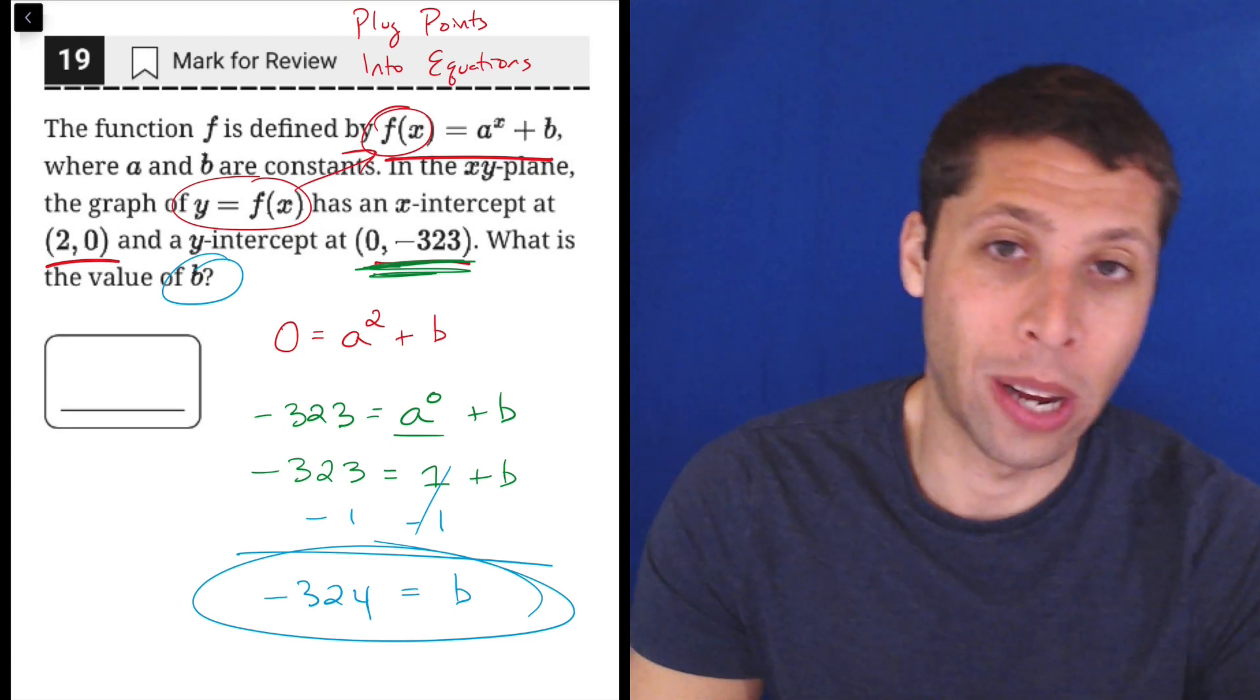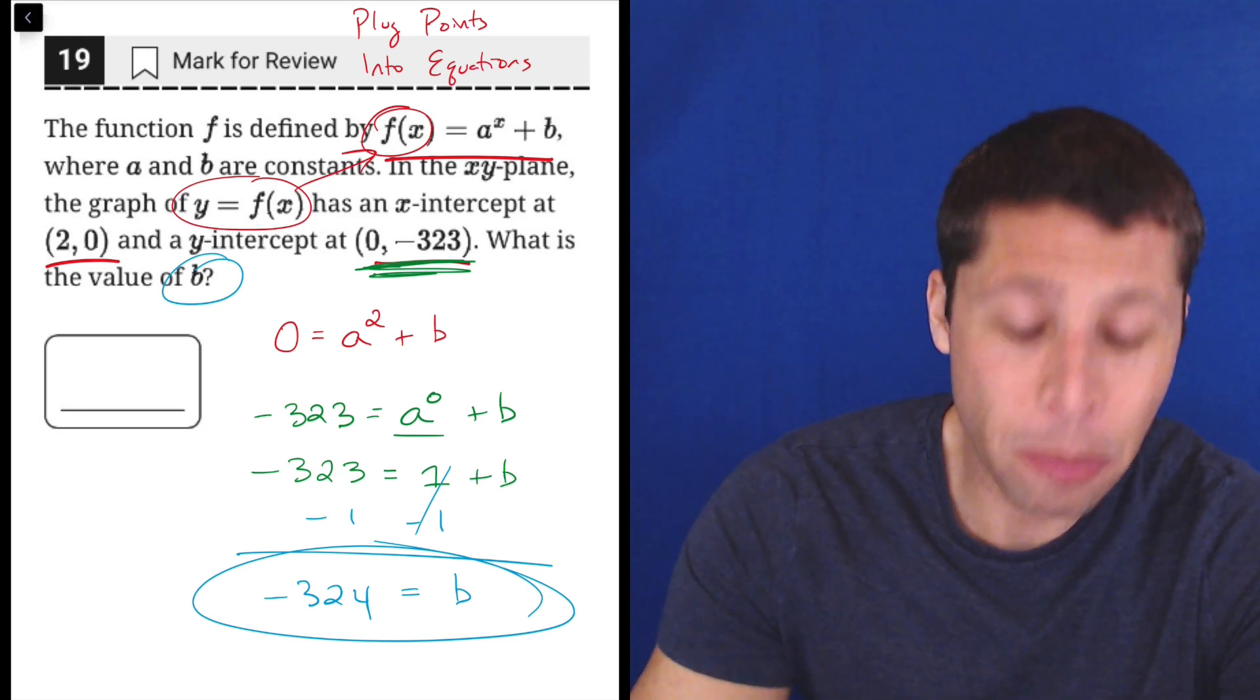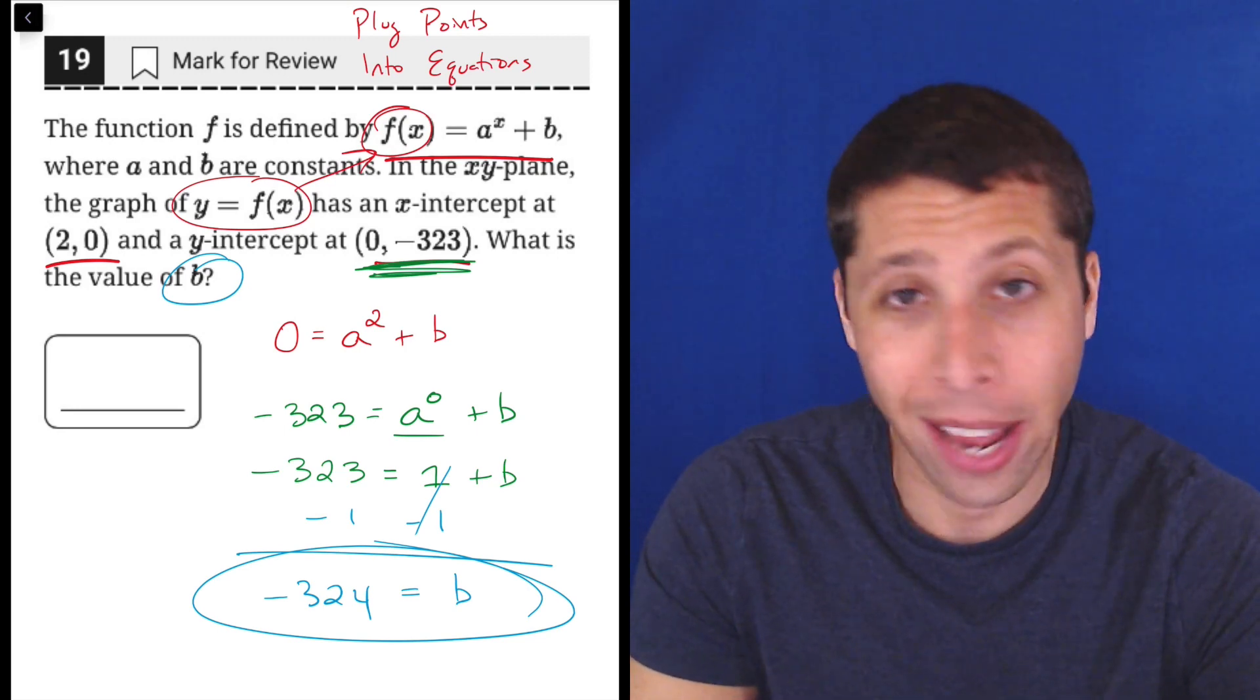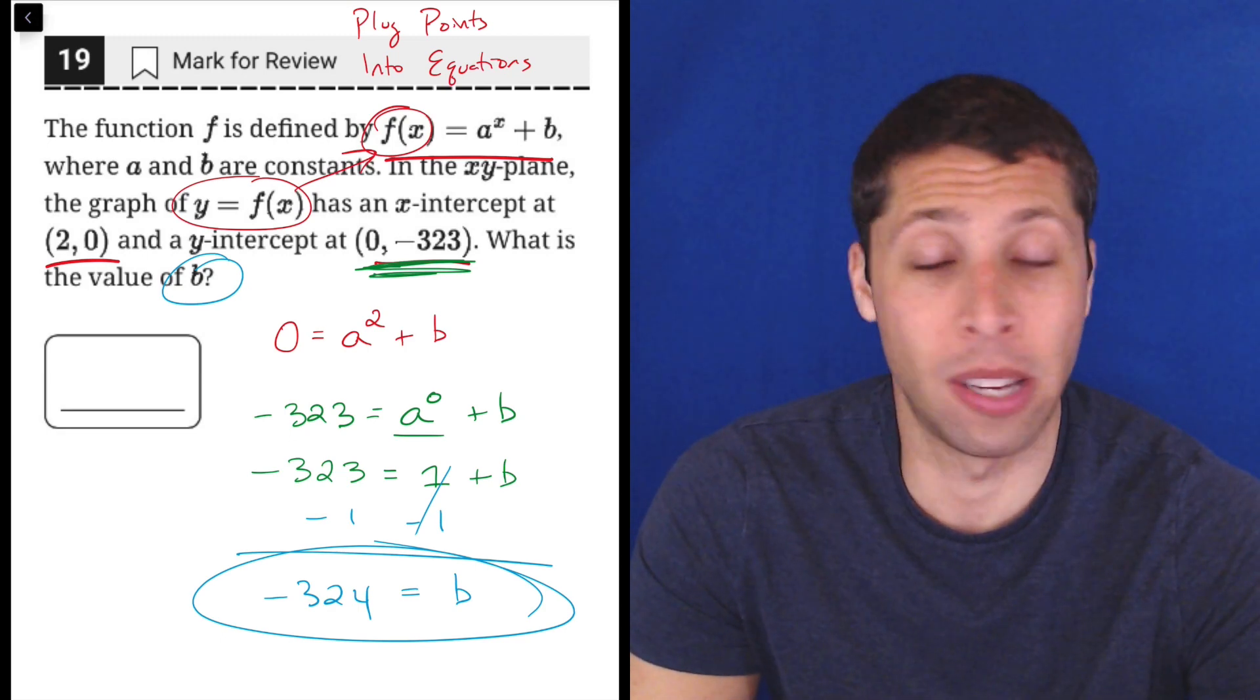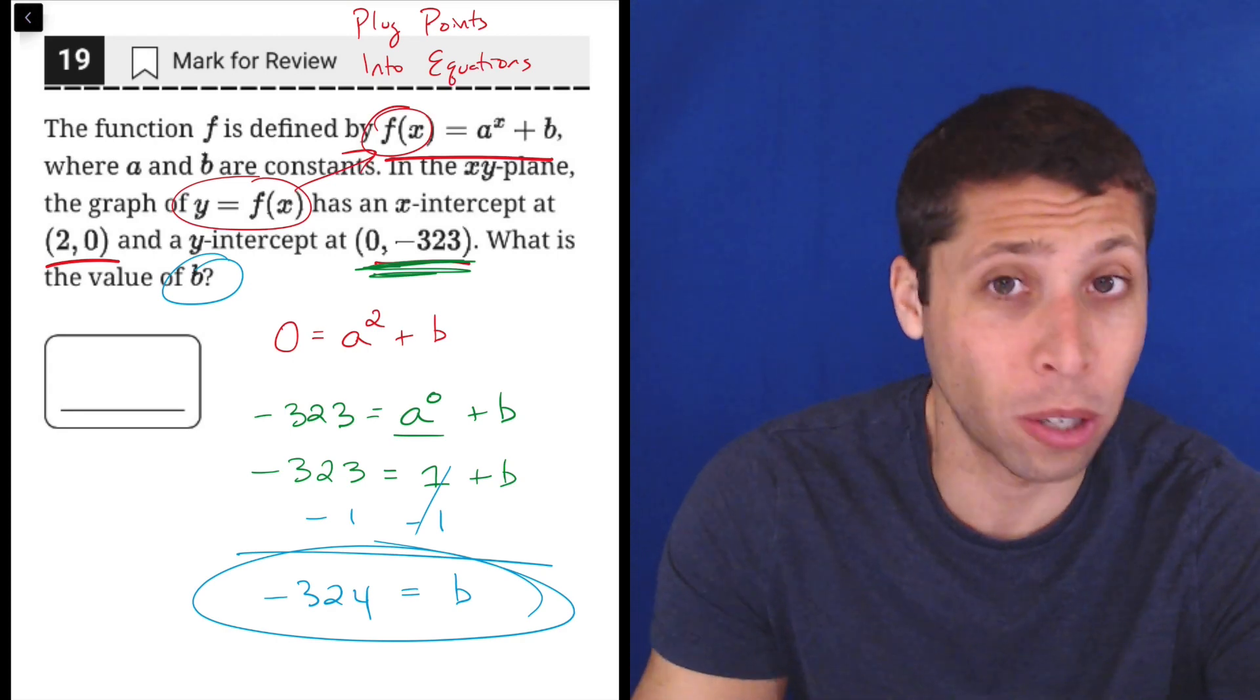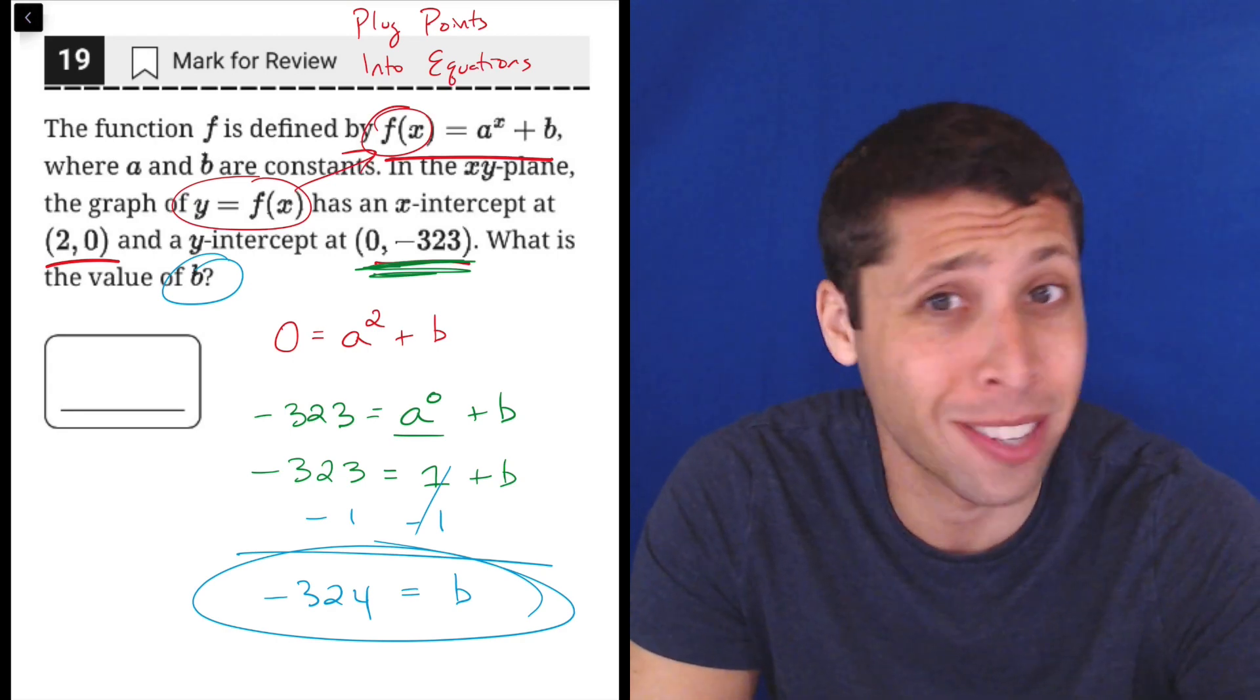So remember I started saying it's a hard question? It's hard because most people read this and are like, no way. No way. This is too crazy. I've never learned anything like this. This is nuts. This sounds insane. I don't know exponentials. I don't know how this is going to work. Negative 323 is such a weird number. It scares you.